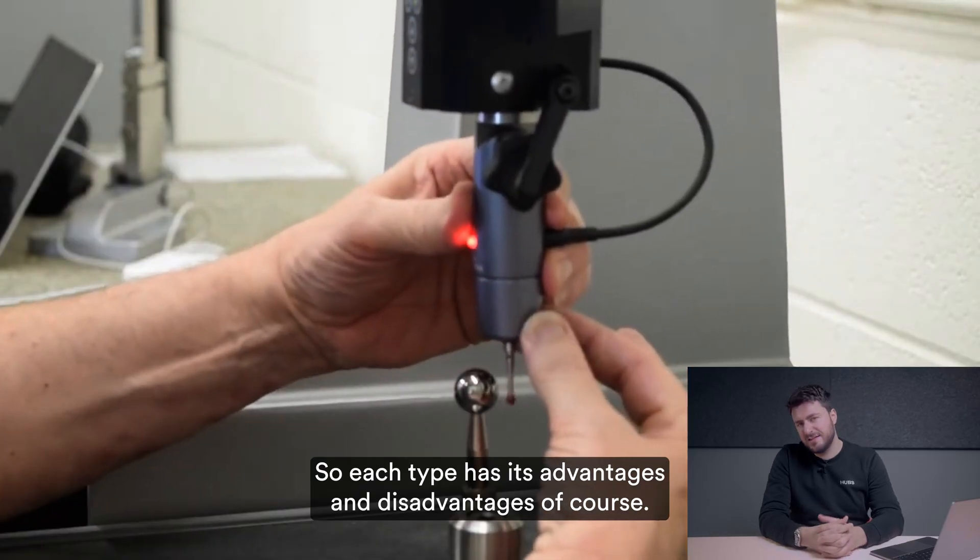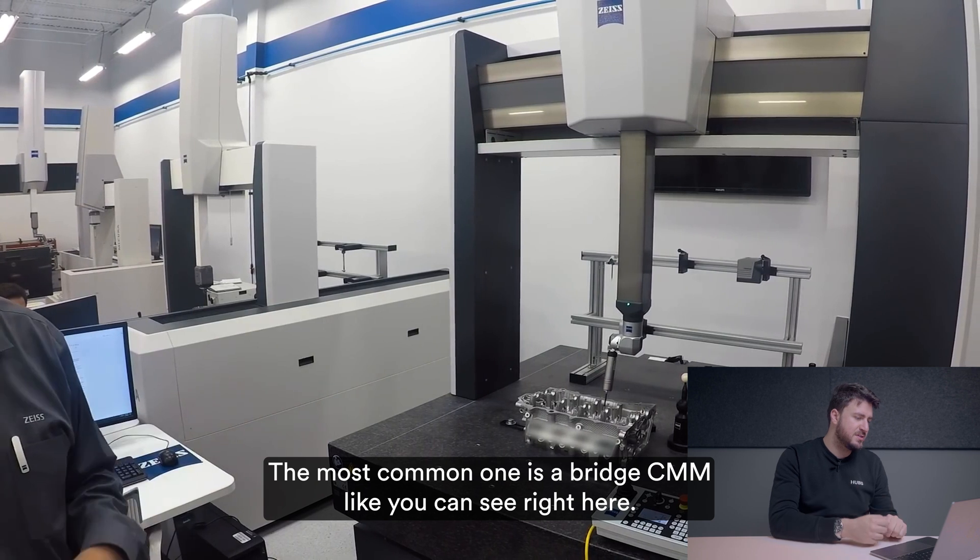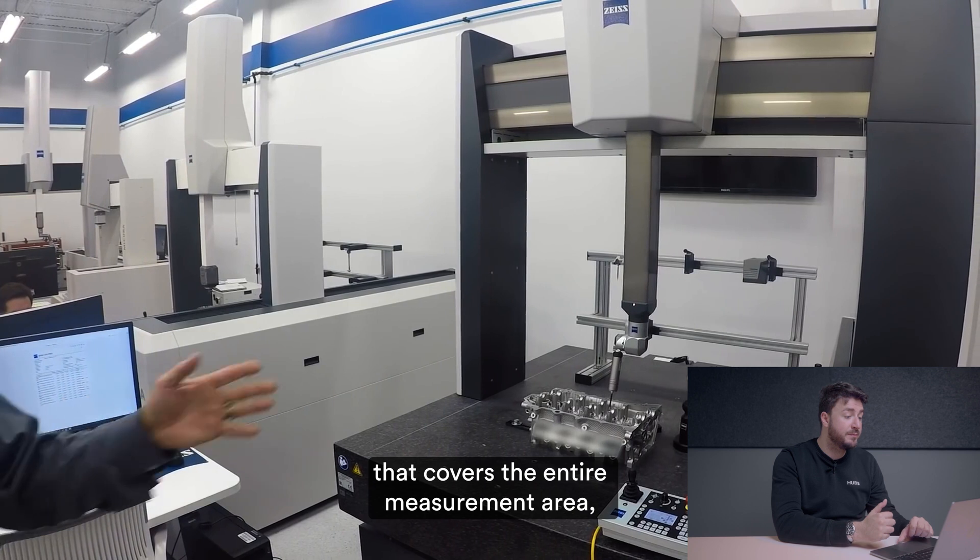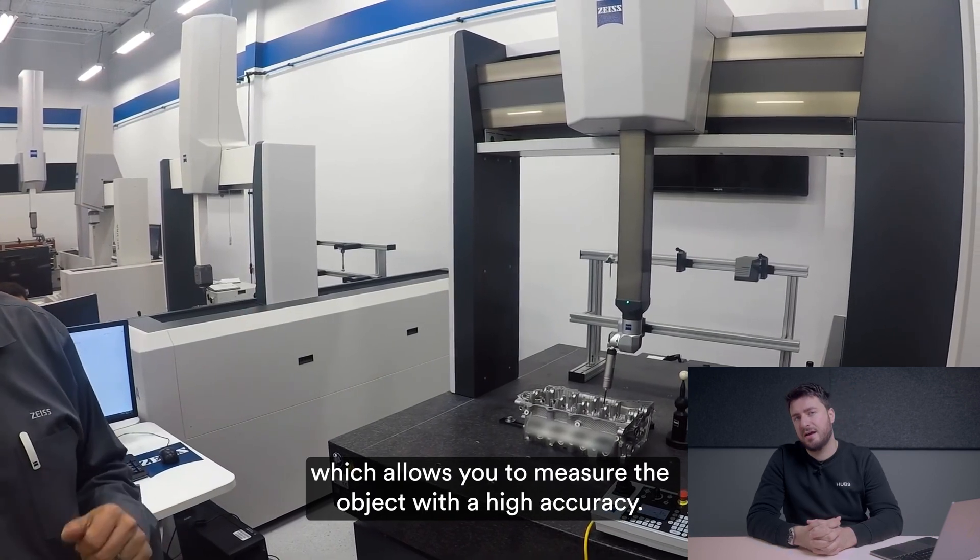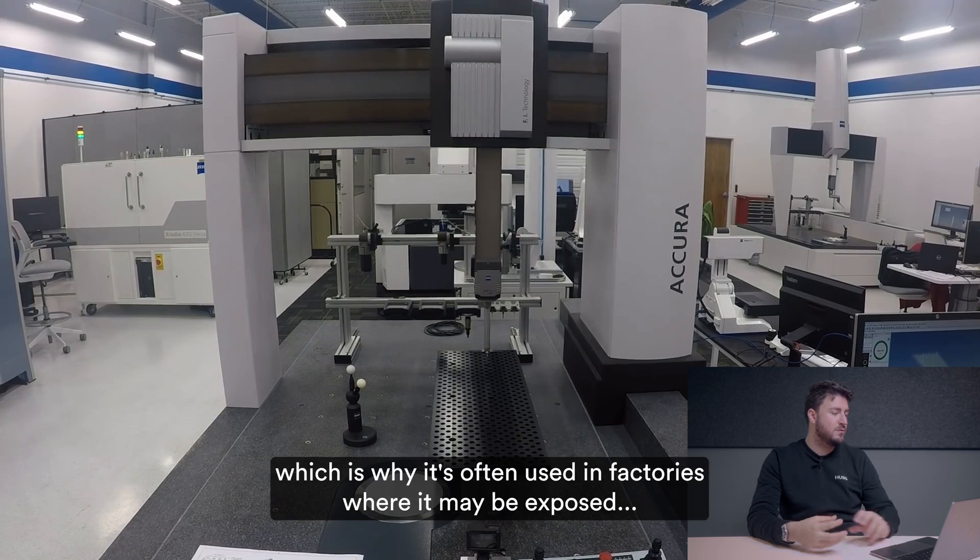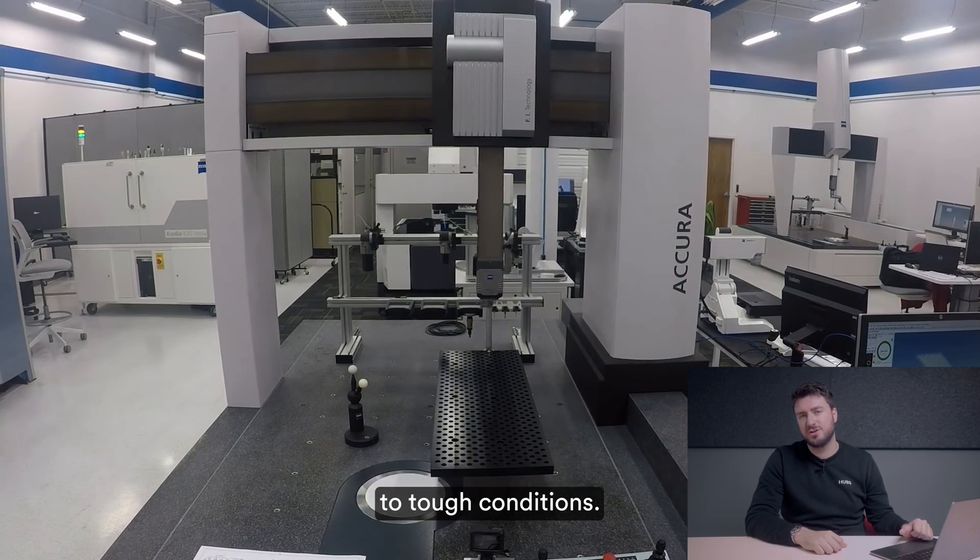So each type has its advantages and disadvantages. Of course the most common one is bridge CMM like you can see right here and you can see that the machine has a bridge shaped structure that covers the entire measurement area which allows you to measure objects with high accuracy. This type of CMM is also known for being strong and long lasting which is why it's often used in factories where it may be exposed to tough conditions.